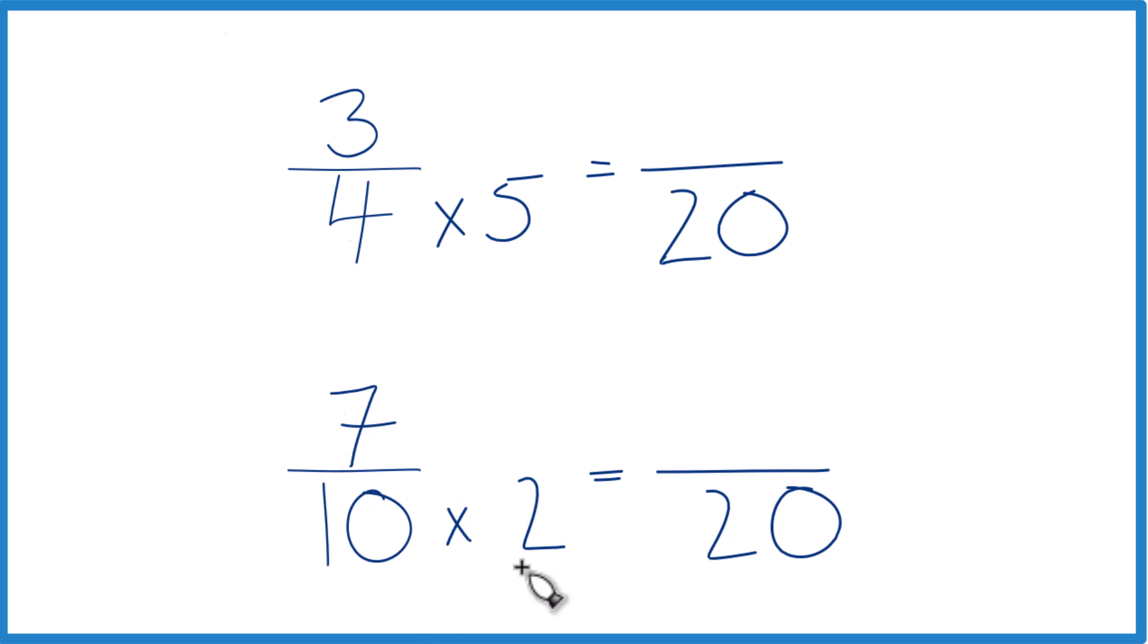But we can't just multiply the denominator. We need to multiply the numerator here by 2. That's because 2 over 2 is 1. We multiply by 1, we don't change anything, just the representation here.